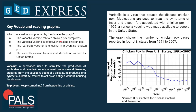Answers A and B are relatively similar — they talk about relief of symptoms and treating chicken pox, meaning people that have chicken pox receiving medication to get rid of it, to relieve the symptoms and fight the fever. But that is not what the graph shows us. The graph shows us only the number of people that got chicken pox, not how they were treated, and that number decreased over our time period.